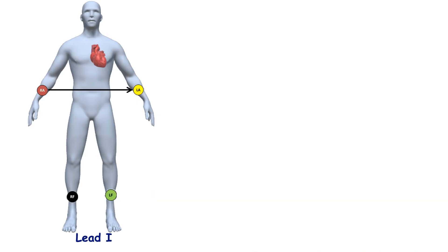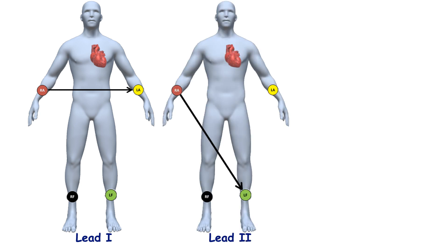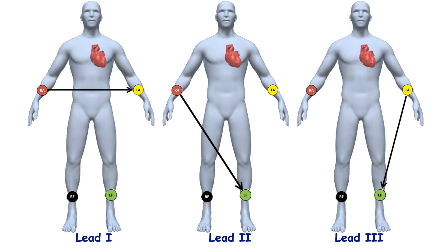Lead 1 reflects the voltage between the left arm and the right arm. Lead 2 shows the voltage between the left leg and right arm. Lead 3 reflects the voltage between the left leg and the left arm.